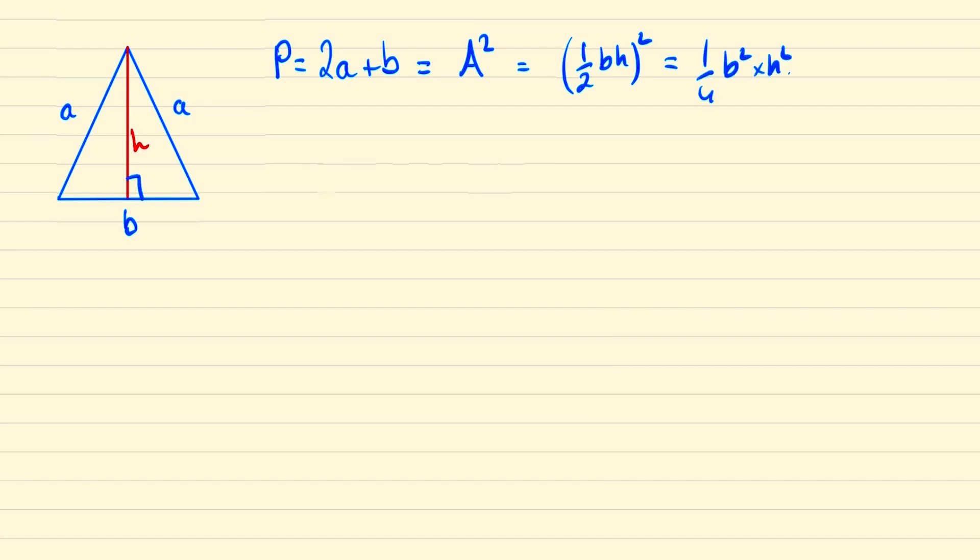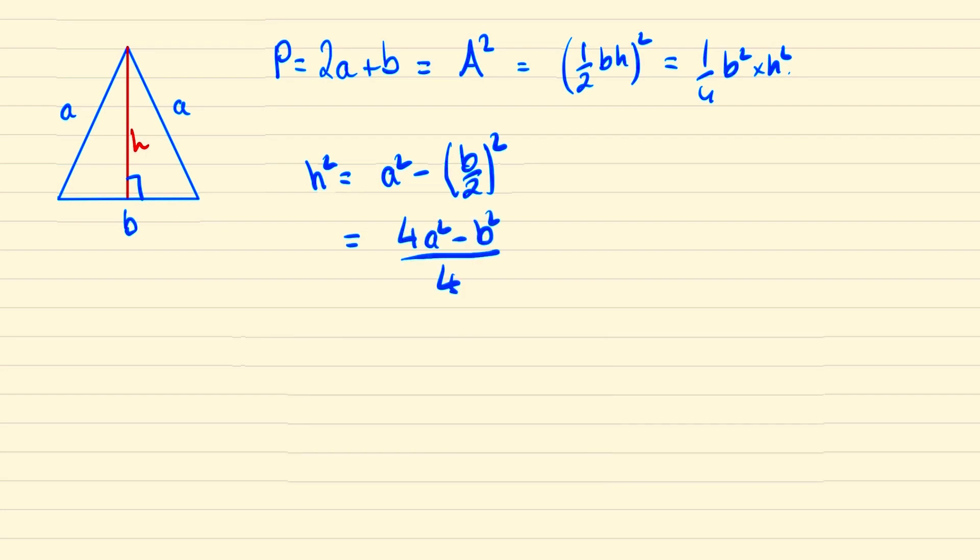We can then use Pythagoras's theorem to find that h squared is equal to a squared minus b over 2 squared, which we can simplify to be 4a squared minus b squared over 4. And so from the perimeter equaling the area squared we have that 2a plus b is equal to 1/16th of b squared times 4a squared minus b squared.